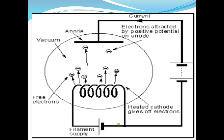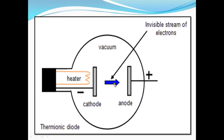In short, if the anode is positive, the negative electrons are attracted across the gap and current flows. If the anode is negative, the negative electrons are repelled and no current flows. This shows that electrons are negative, and because of this, current can flow only one way through this diagram — the negative electrons are attracted towards the anode. This device is called the diode valve, and we can see the movement of electrons in only one direction.